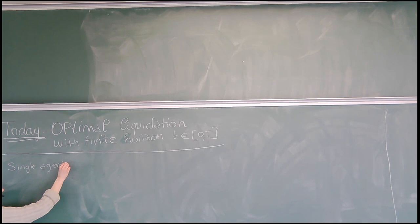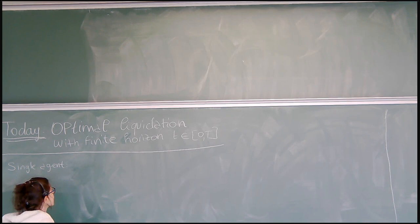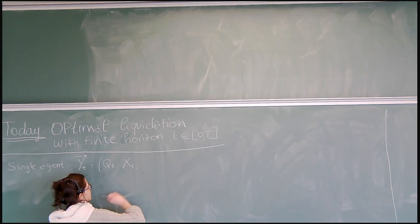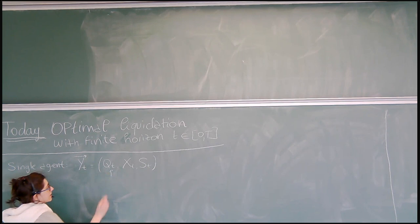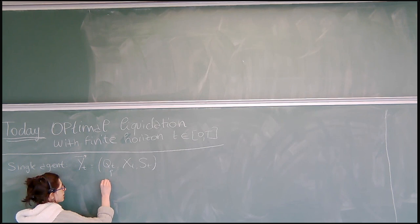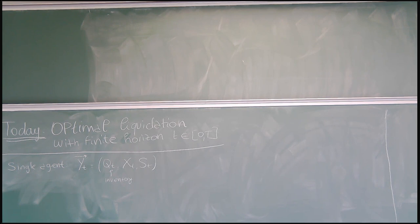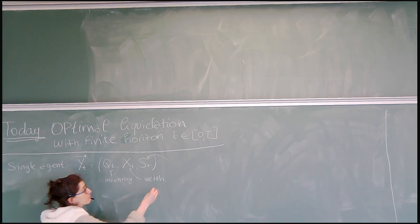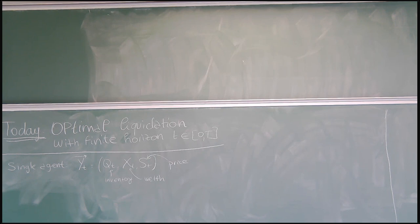The idea of the model is as follows. There are random variables describing the state of your system, encoded into a vector Y depending on time. These random variables are Q(t), X(t), and S(t). Q is the amount of instrument that you want to sell in this finite time interval — I will call it the inventory. X is essentially the amount of money you make out of this selling — I will call it the wealth. And S is a variable describing the state of the market, specifically the price associated to the object the agent wants to sell.